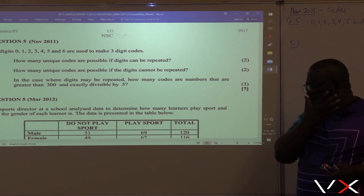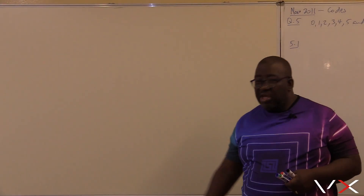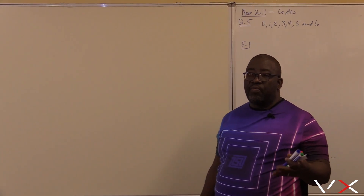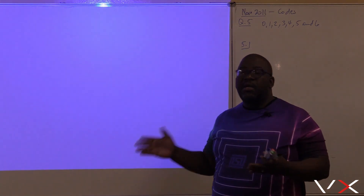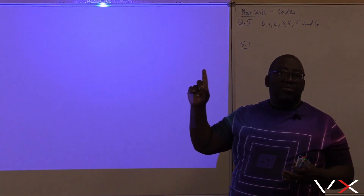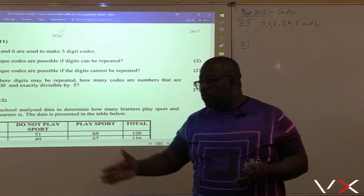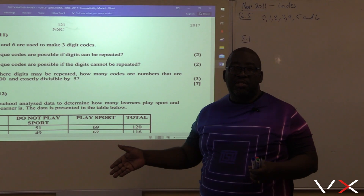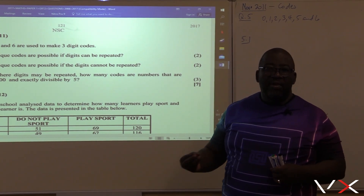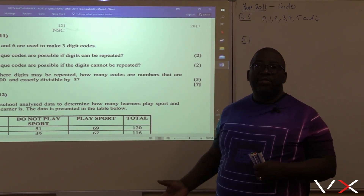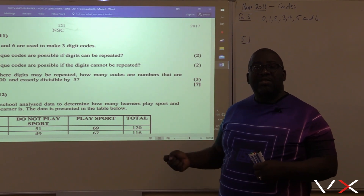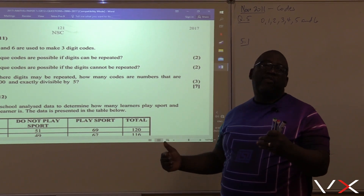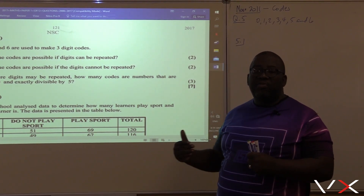Let's make an example before we go to that problem. If I have five chairs and five learners coming to sit in them — talking about repetition being allowed — the first learner has five options. Because repetition is allowed, the child can go back and come again, so the next child also has five options, and the next child will have five options, and so on.